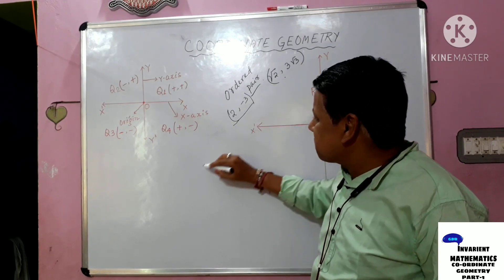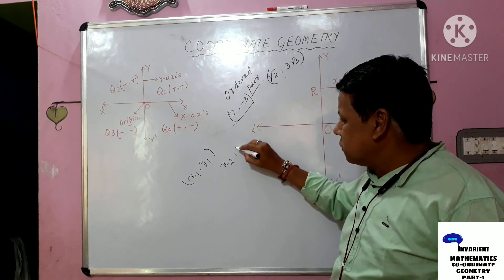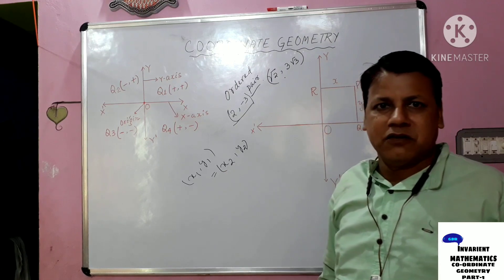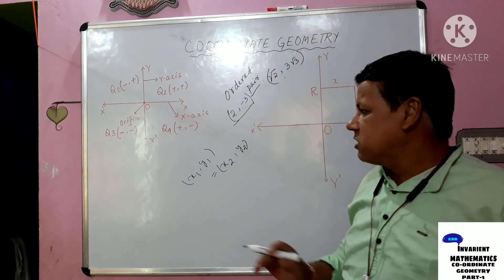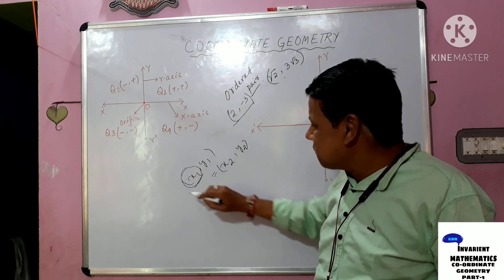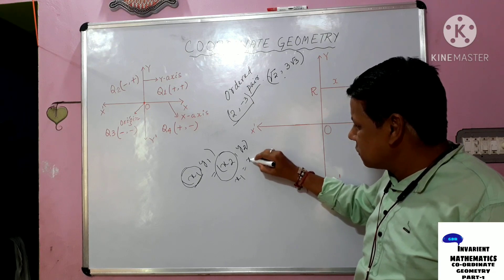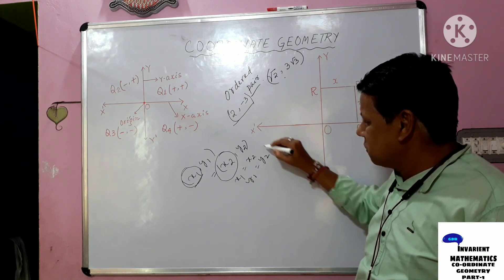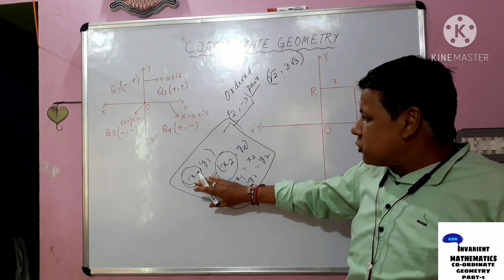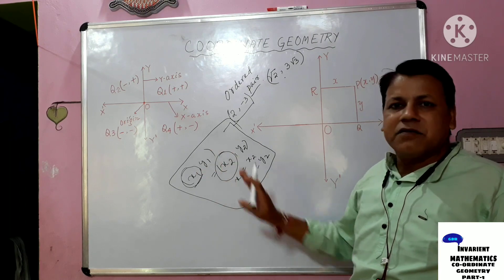Now if we take two ordered pairs, suppose (x₁, y₁) and (x₂, y₂), the two ordered pairs are equal with each other if their first elements are equal — that is, x₁ = x₂ — and their second elements are equal — that is, y₁ = y₂. That means the two ordered pairs are equal with each other if their respective first elements are equal and their respective second elements are equal.